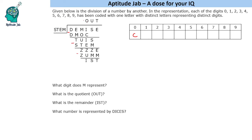We multiply STEM by O, then by U, and then by T. When we multiply STEM by U, we get the value STEM itself — that means U is 1.